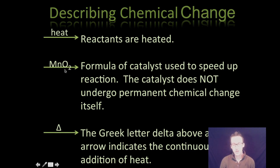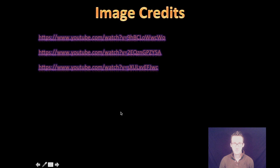The catalyst itself does not undergo permanent chemical change. However, it's an important piece of information to include in your chemical reaction because it's telling us that we're adding something to speed that reaction up. You'll also see this Greek letter delta above the arrow indicating continuous heat. And I've provided a few links here if you want to go back and watch any of those YouTube videos in terms of observing those different types of chemical change.